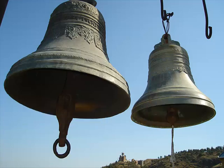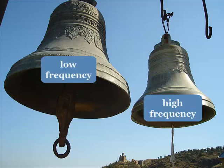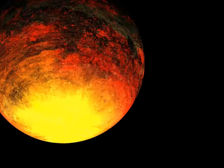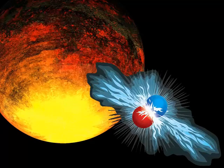The natural frequency of a small bell is higher than that of a big bell, and it rings at a higher pitch. Most things — planets, atoms, and almost everything in between — have elasticity and vibrate at one or more natural frequencies.